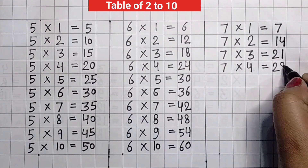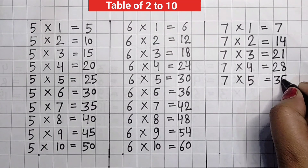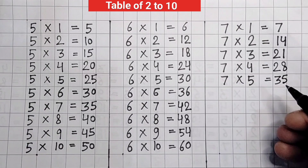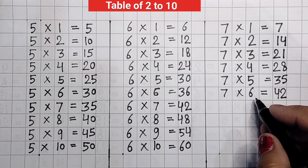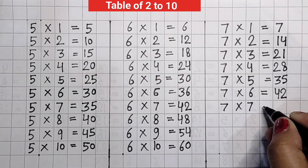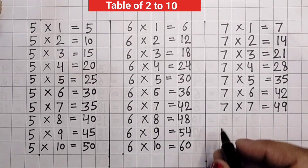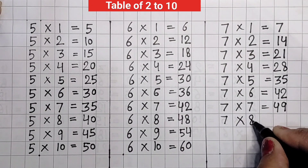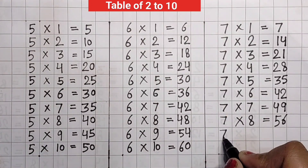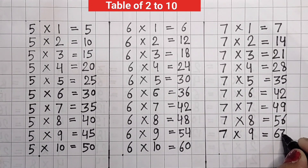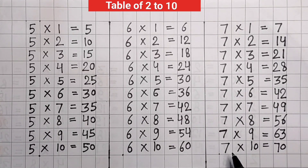7, four's are 28. 7, five's are 35. 7, six's are 42. 7, six's are 42. 7, seven's are 49. 7, seven's are 49. 7, eight's are 56. 7, nine's are 63. 7, nine's are 63. 7, ten's are 70. 7, ten's are 70.